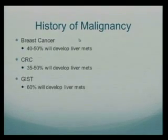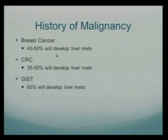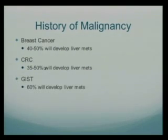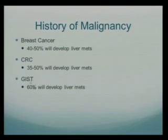Previous history of malignancy is important in the setting of an incidental liver mass. Breast cancer: 40 to 50% of patients with breast cancer will eventually develop liver mets. Colorectal cancer: 35 to 50% of patients with colorectal cancer will develop liver mets. Importantly, GIST — up to 60% of GIST patients can develop liver mets.